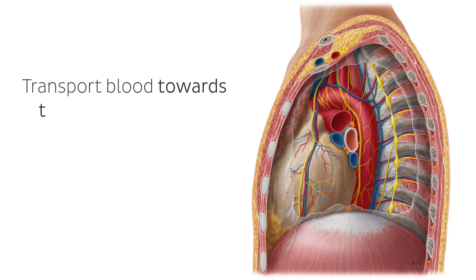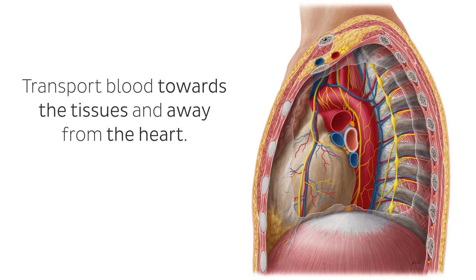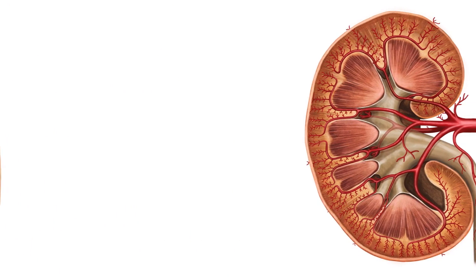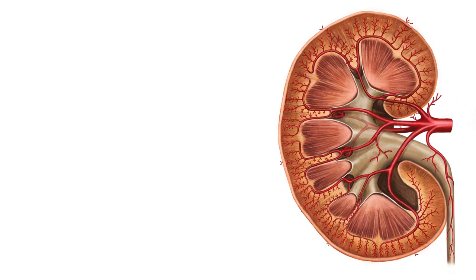Arteries transport blood towards the tissues and away from the heart, and have thick muscular walls with small internal lumina or passageways that can withstand blood under high pressure. As the arterial branches go away from the heart and deeper into the tissues, they get smaller and smaller so as to be able to access all areas. You can clearly see that on this image of a section of the kidney showing many arteries of different sizes accessing the many intricate areas of the organ.